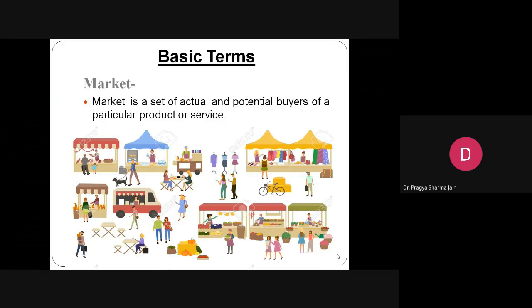The first is market. Traditionally, the market was defined as a place where buyer and seller come together to exchange goods and services. Which means, sellers come to sell goods and services and buyers come to buy goods and services.